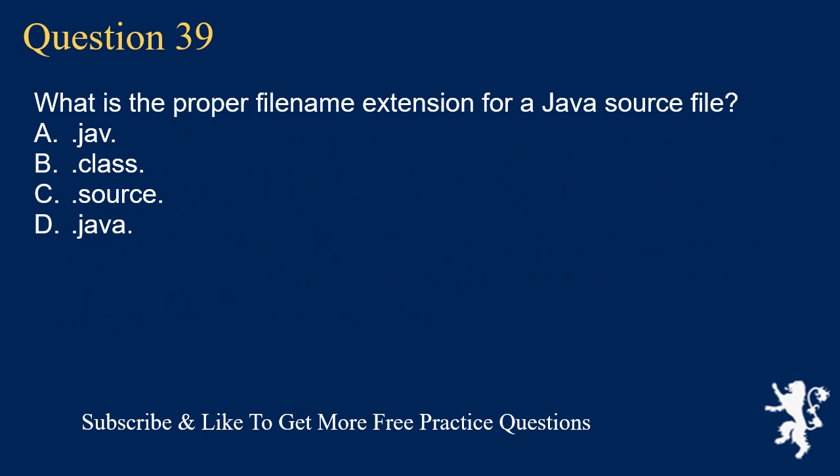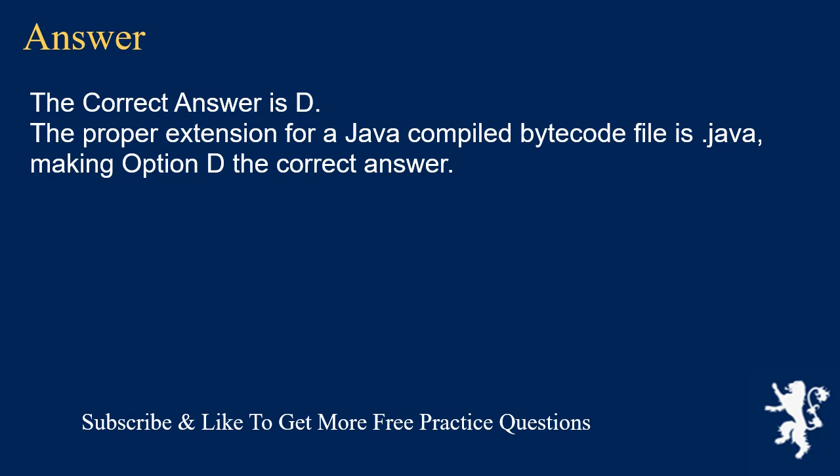Question 39: What is the proper filename extension for a Java source file? A) .jav, B) .class, C) .source, D) .java. The correct answer is D. The proper extension for a Java source file is .java, making option D the correct answer.